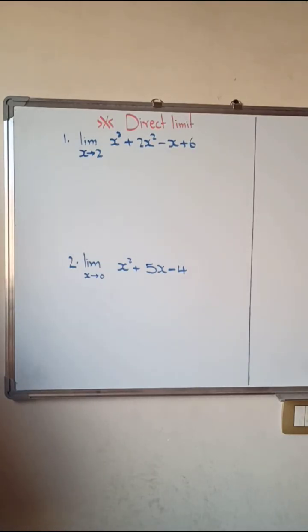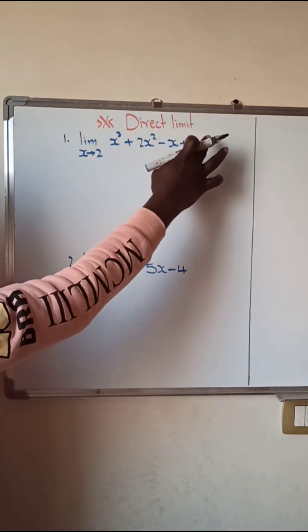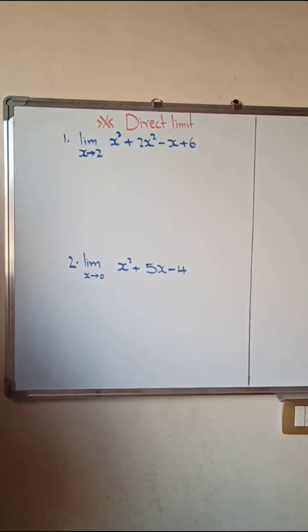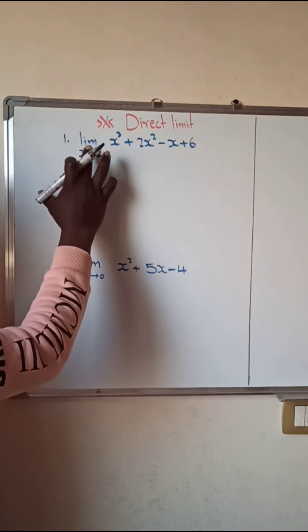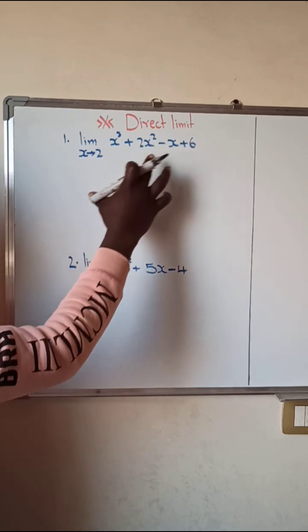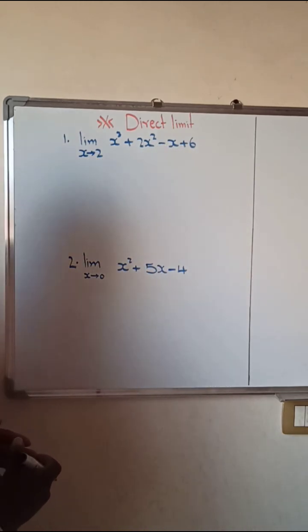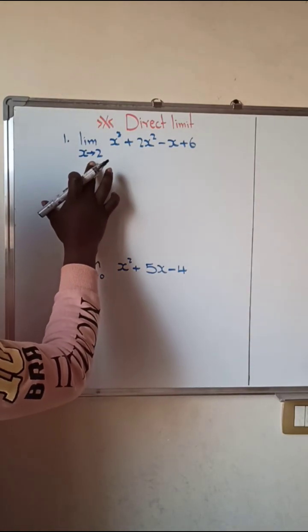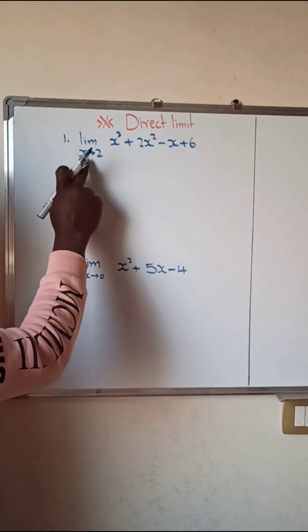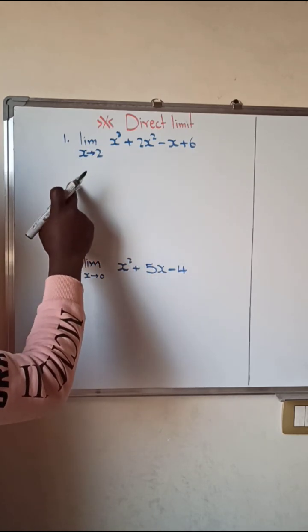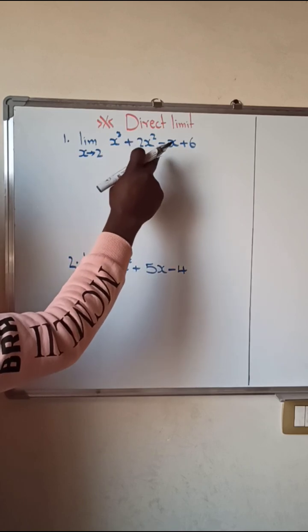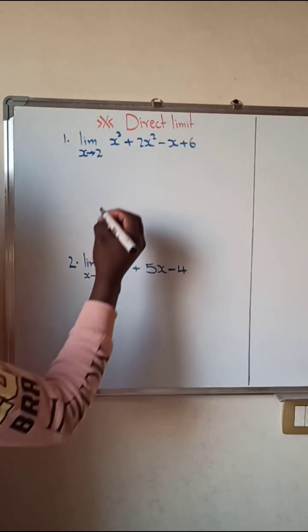Today we're going to deal with limits. As you can see, we have direct limits. Instead of the given example, we have Example 1 and Example 2. In Example 1, we have the limit of x³ + 2x² - x + 6 as x approaches 2. x approaching 2 means x equals 2, which is the value of x. Since the limit is direct, we substitute the value of x immediately in place of x.